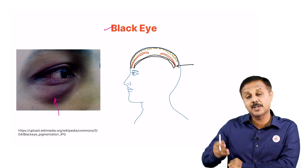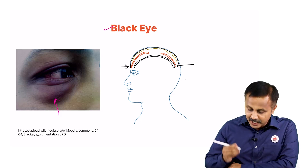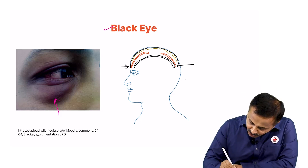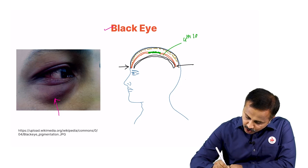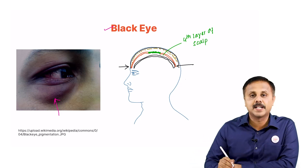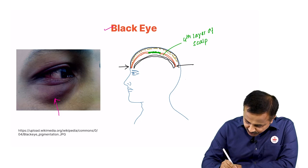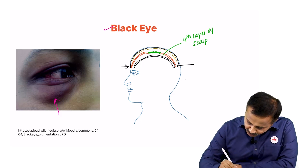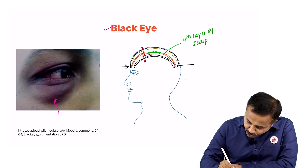The frontal belly does not have a bony attachment. These two bellies are connected by the aponeurotic layer, which is the fourth layer of scalp. Now, imagine there is a rupture of a blood vessel — let's say a blood vessel is traversing the scalp and it gets ruptured. The resulting collection of blood passes posteriorly, but remember it is prevented by the attachment of the occipital belly to the superior nuchal line.